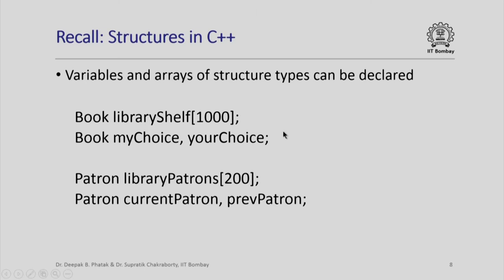In the last lecture we also saw that in C++ it is possible to define variables and arrays of structure types, just like we can declare variables and arrays of primitive data types like integer, double, float, and character. For example, library_shelf is an array of size 1000 where each element is of structure type book. my_choice and your_choice are two variables each of structure type book. library_patrons is an array of size 200 where each element is of structure type patron, and current_patron and previous_patron are two variables each of structure type patron.